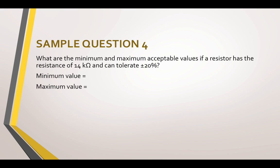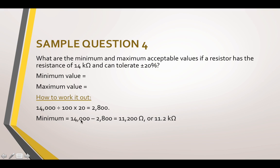Sample question four. What are the minimum and maximum acceptable values if a resistor has the resistance of 14k and can tolerate plus minus 20%? So this is a more technical question and I will show you how to work it out. So 14k would be 14,000. You would need to divide this by 100 and times it by 20, which would give you 2,800. To work out the minimum value, you would use 14,000 minus the 2,800 which would give you 11,200 or 11.2k. And the maximum 14,000 plus the 2,800 which would give you 16,800 or 16.8k. This type of question would appear in a more advanced electrical comprehension test.